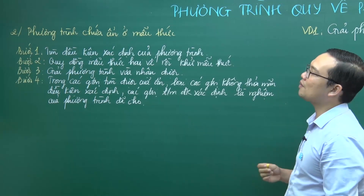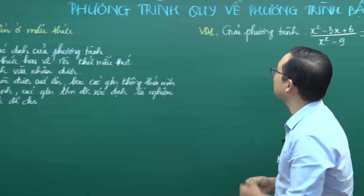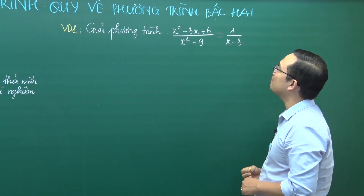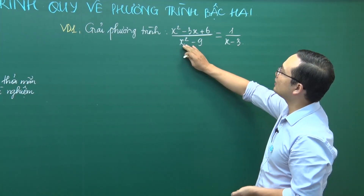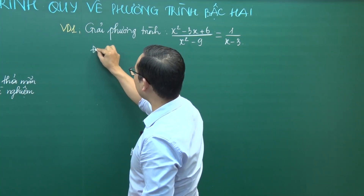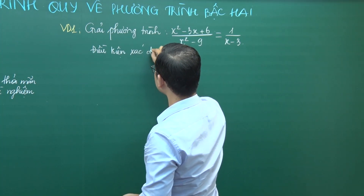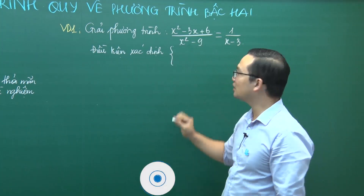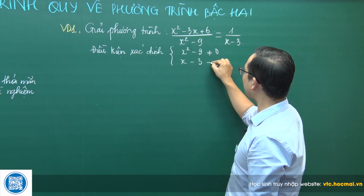Ví dụ số 1: Giải phương trình (x² - 3x + 6) / (x² - 9) = 1 / (x - 3). Các bạn thấy phương trình này chứa ẩn ở dưới mẫu thức. Động tác đầu tiên là đặt điều kiện xác định: tất cả các mẫu phải khác không, tức là x² - 9 ≠ 0 và x - 3 ≠ 0.